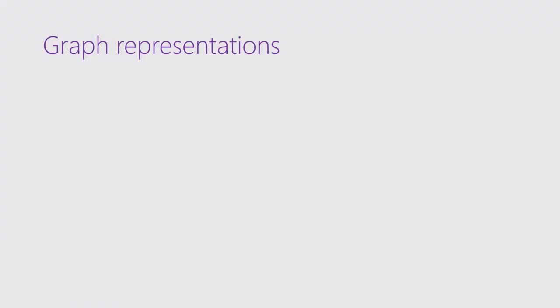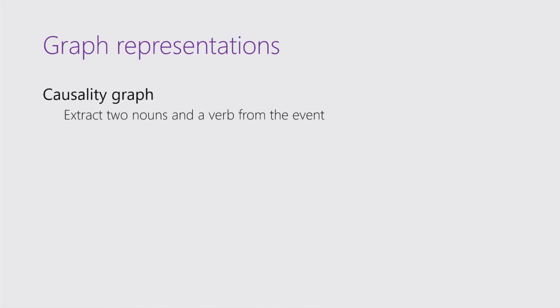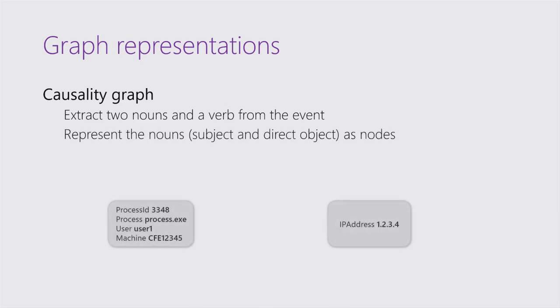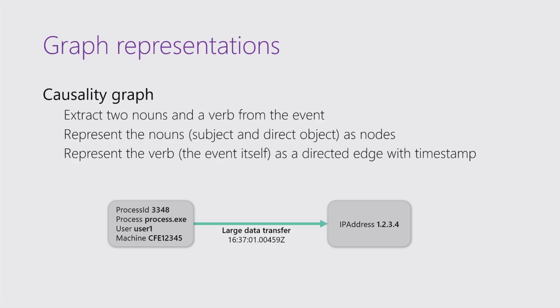Here's where I use graphs. There are two ways to represent detection results as graphs. The first is a causality graph. We take two nouns and a verb to represent every event going through the system. Imagine an alert saying a large amount of data has left a machine, coming from a process and going to an IP address on the internet.